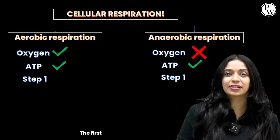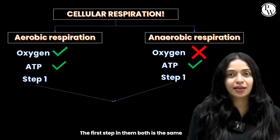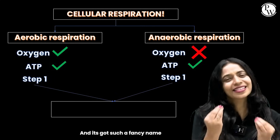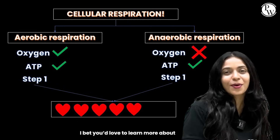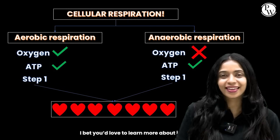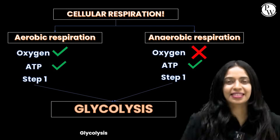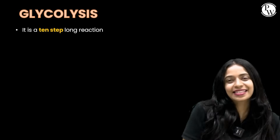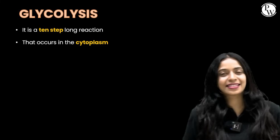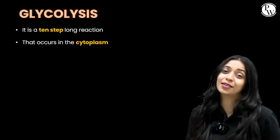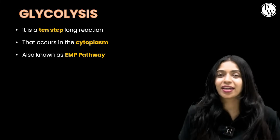The first step in both is the same, and it's got such a fancy name. Glycolysis — it is a 10-step long reaction that occurs in the cytoplasm, also known as the EMP pathway.